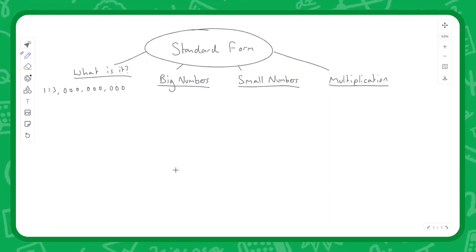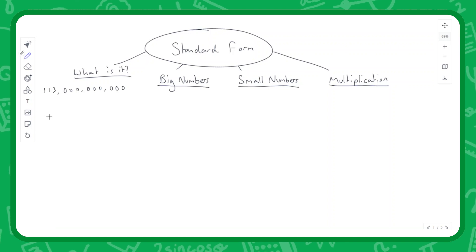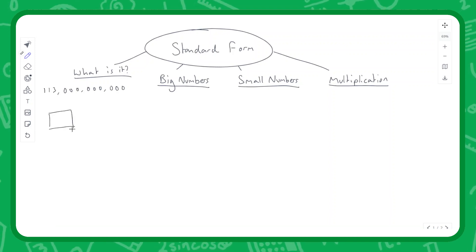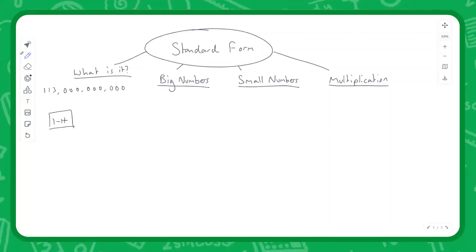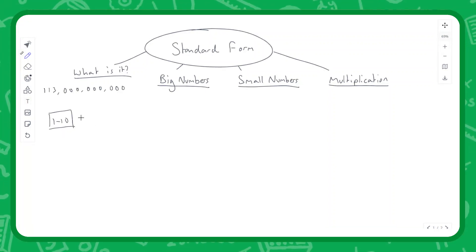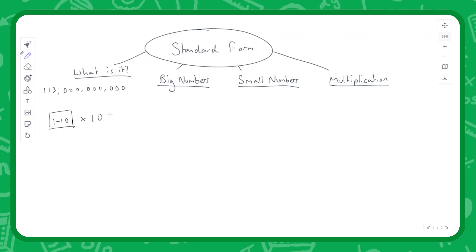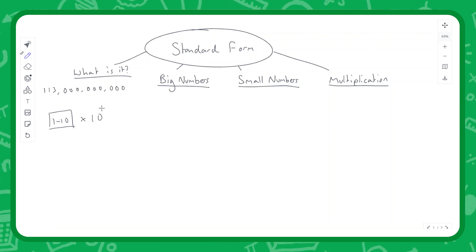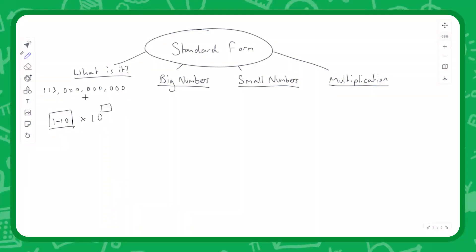There's one rule in standard form: we have a number at the start and that number has to be between one and ten. We then take the original number and multiply it by some scale factor to make it either much bigger or much smaller, depending on the original number we want to represent.